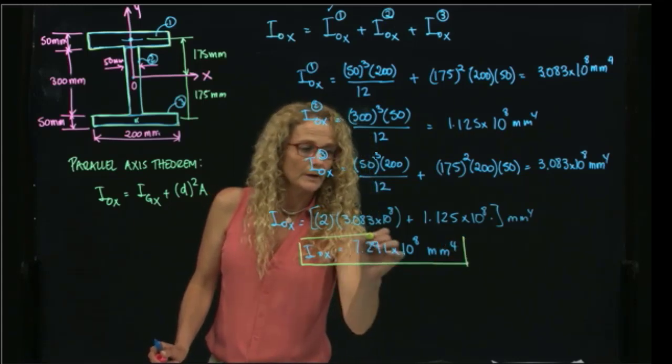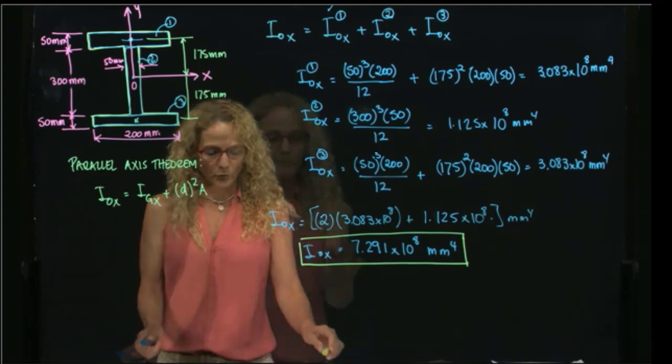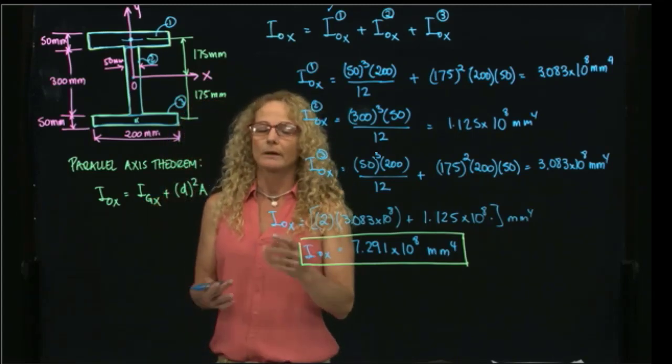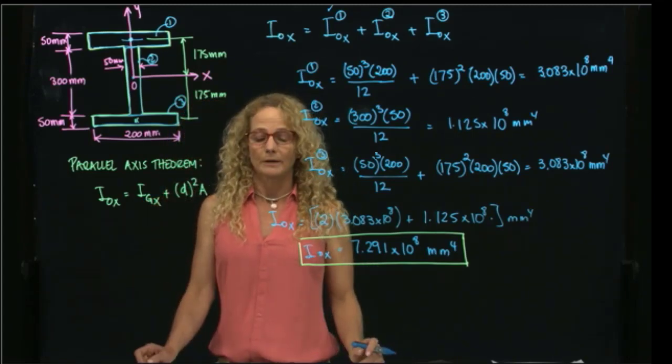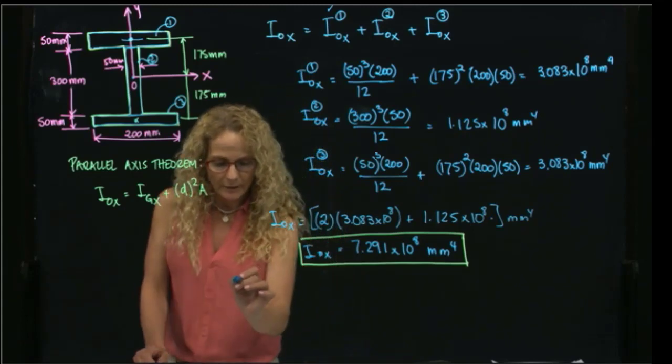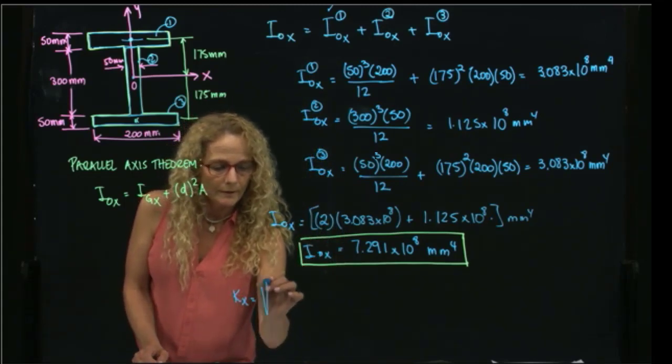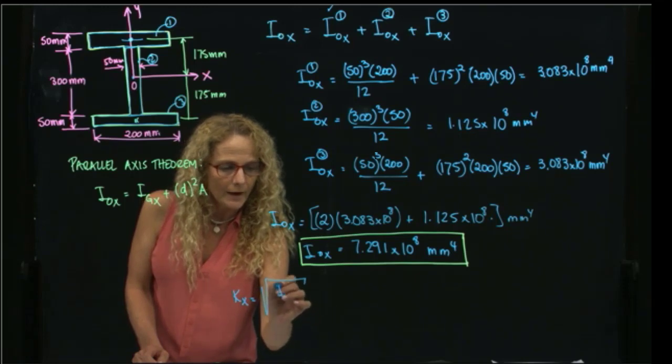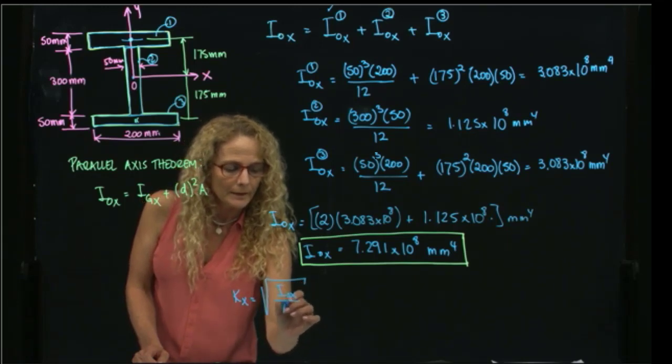Now that we have the area moment of inertia with respect to the x-axis, we can calculate the radius of gyration. The definition of radius of gyration, as you recall, is the square root of that value divided by the area.